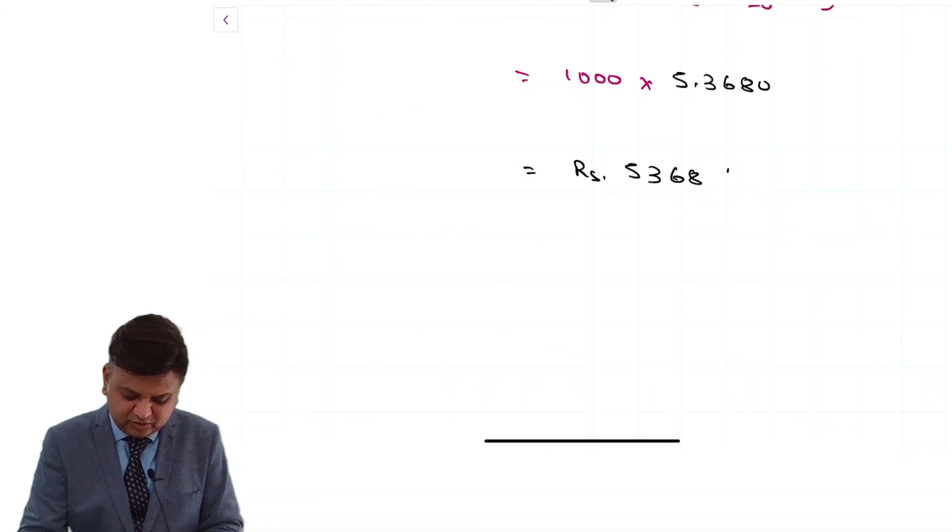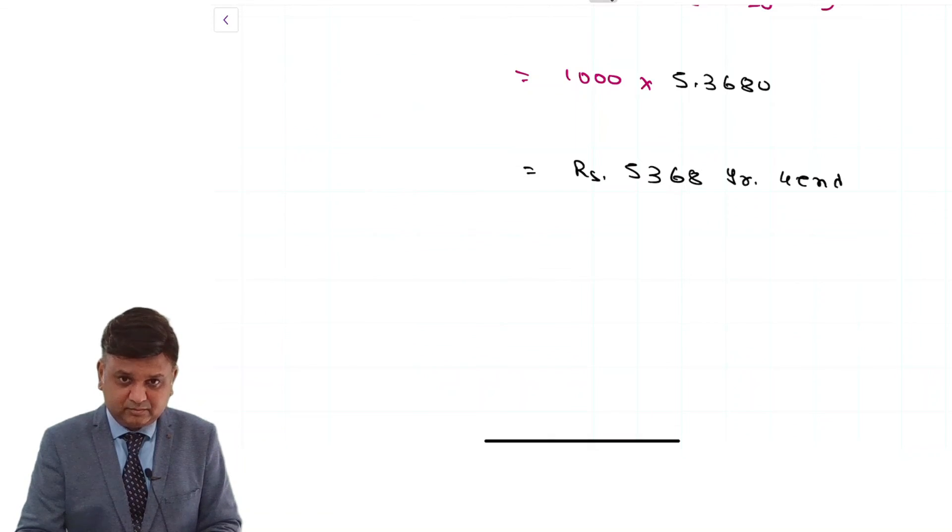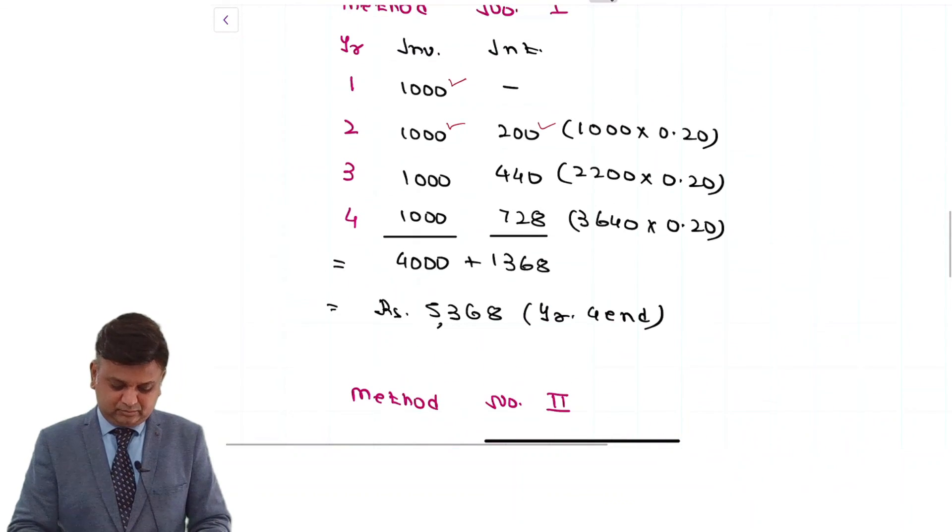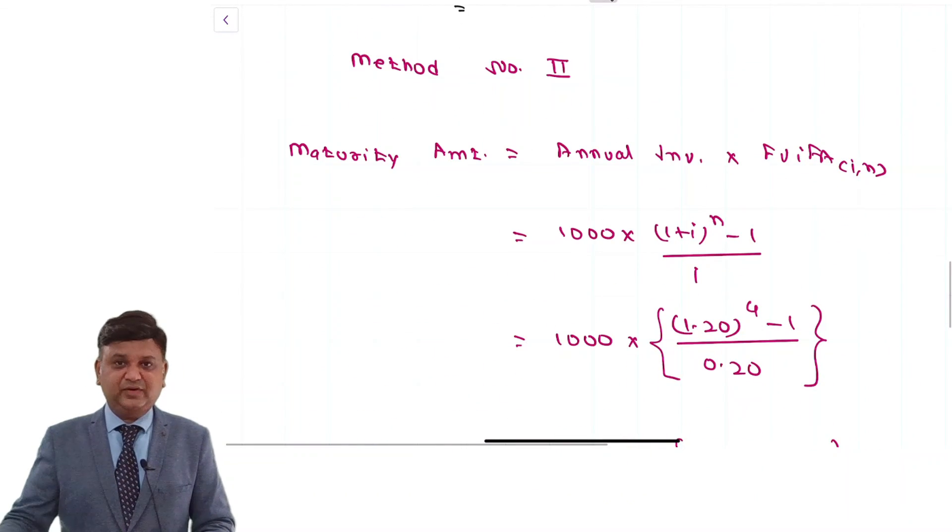This is the way the maturity amount of deposit can be calculated. That is year 4 and over here. So the same answer that you find.